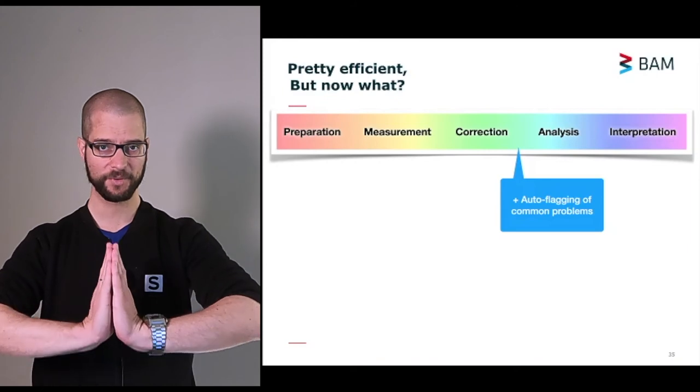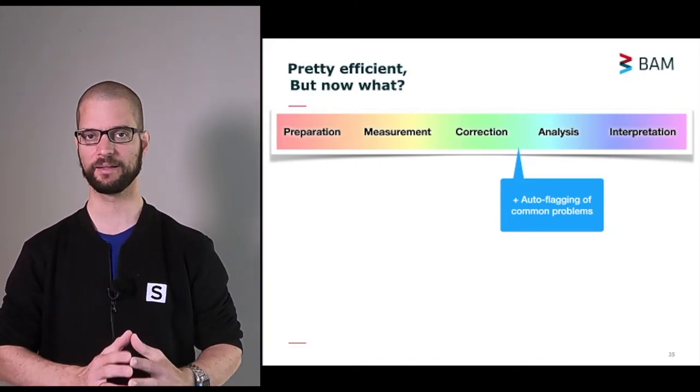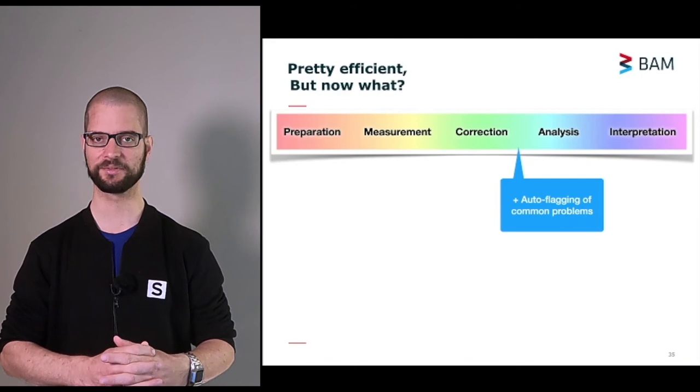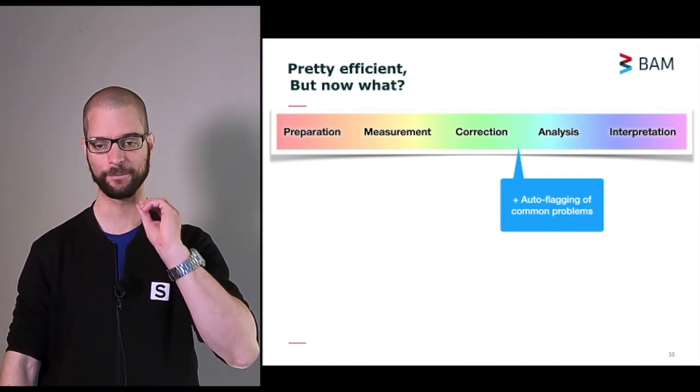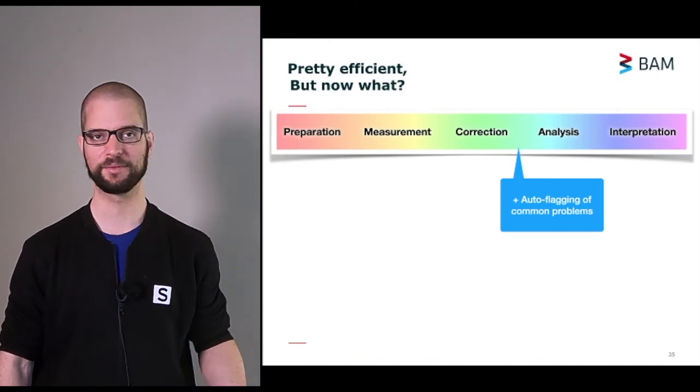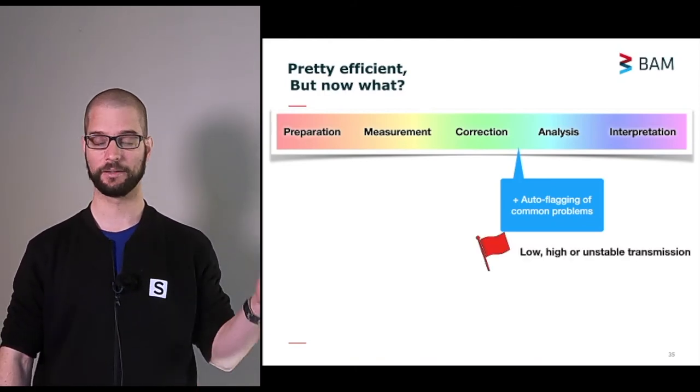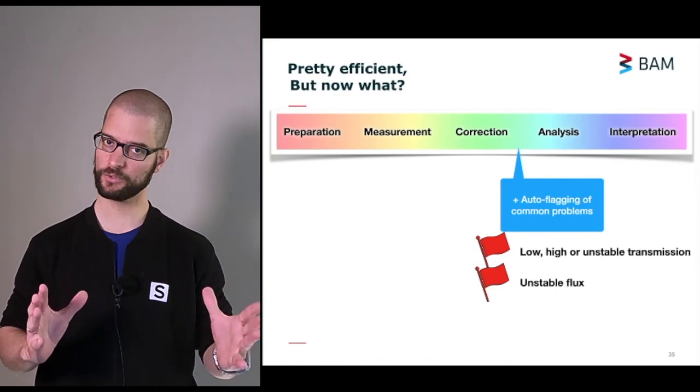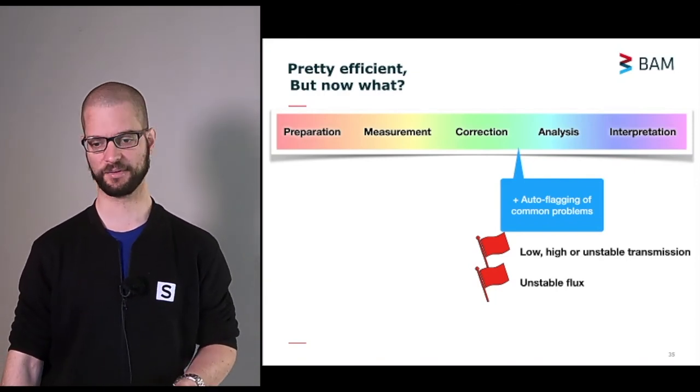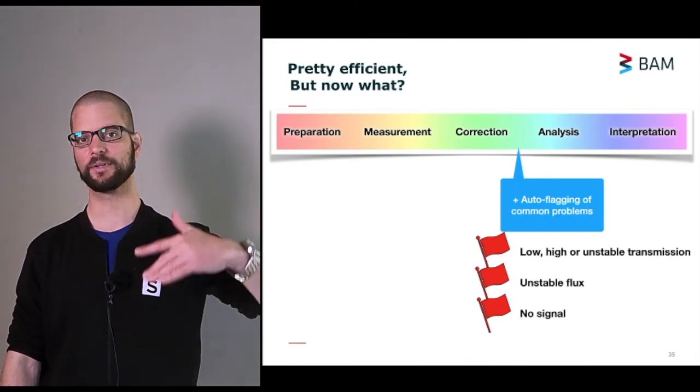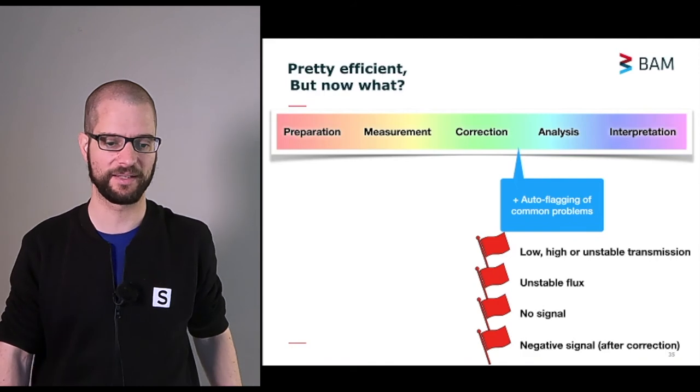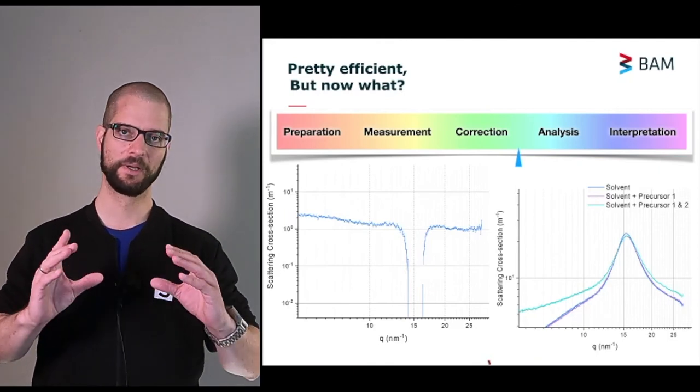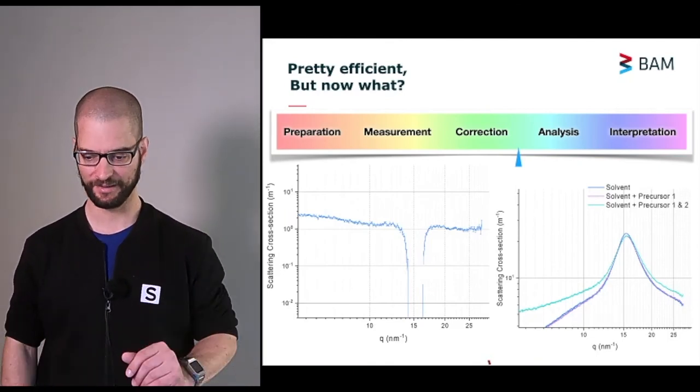After the correction, and this is something we actually already are doing, we can automatically flag common problems, so that we don't have to investigate when we notice something about the data, we can have problems automatically flagged, so we know which measurements to repeat. This includes things like low, high, or unstable transmission factors, unstable fluxes. If our machine is not stable, it's usually stable, but, you know, it has its moments. If there is no signal, or no significant signal above the background, or if you get some things like negative signal after correction, which means you've chosen the wrong background, or your background, which you thought would not change, is actually changing, like in the example shown here.